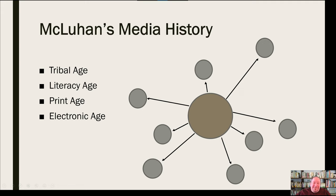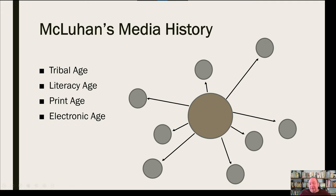Next, you have the electronic age — starting perhaps with the telegram, but really radio and television. In the electronic age, communication spreads out widely and people are able to isolate more. We don't have to be around other people to be connected — we can still get the news and the same entertainment without being around people. You start to see this kind of isolation. The technology determines how we're engaging with one another, causing us to think differently and process information differently.